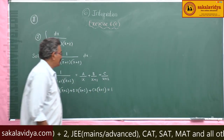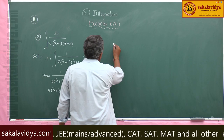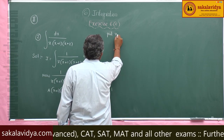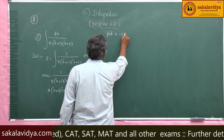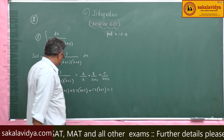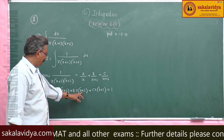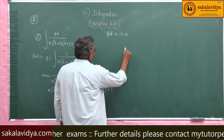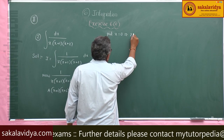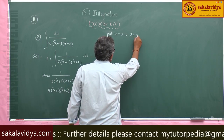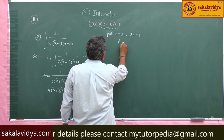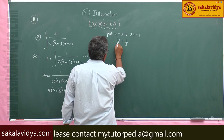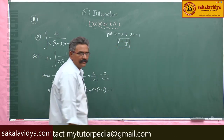Now, put x equal to 0. If you put x equal to 0, the B and C terms become 0. So 2A equals 1, therefore A equals 1/2.